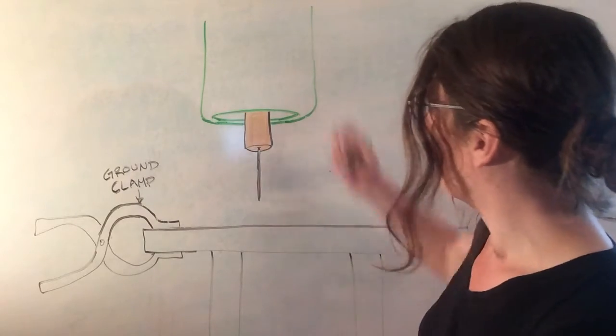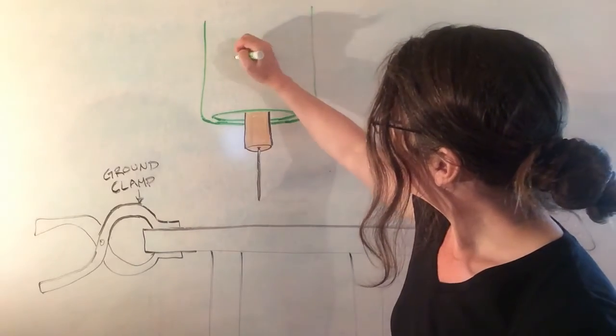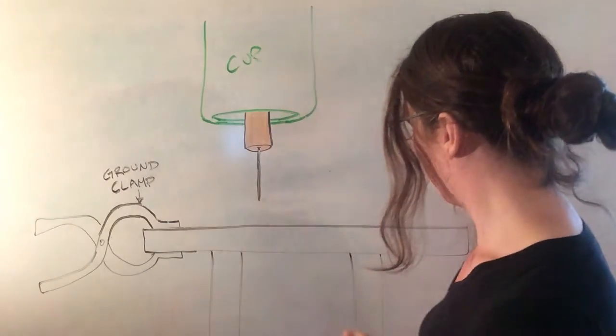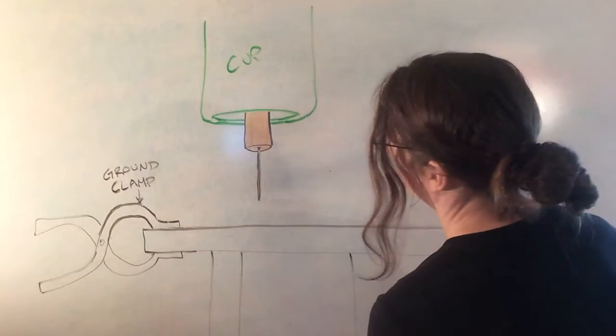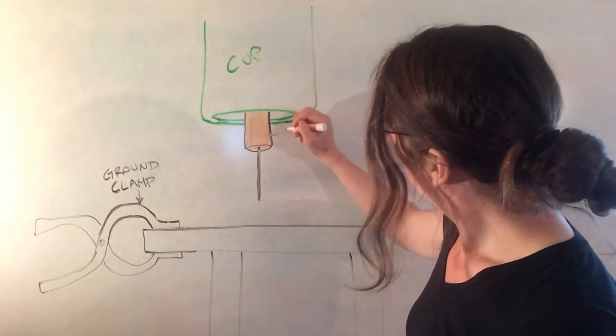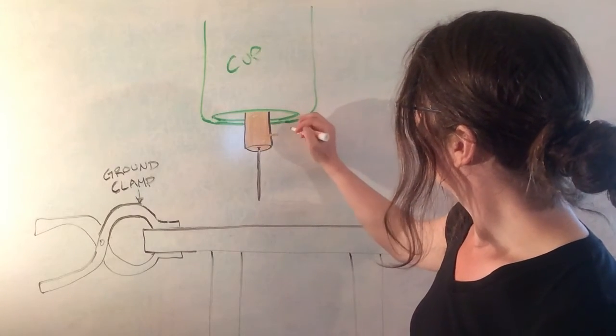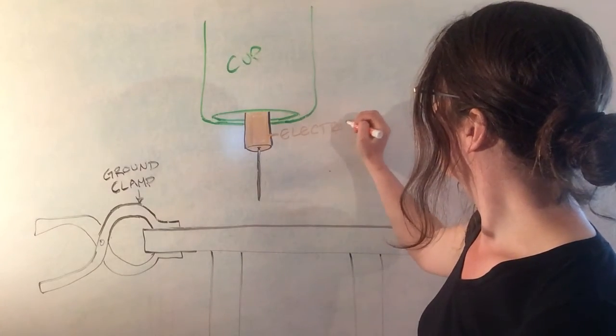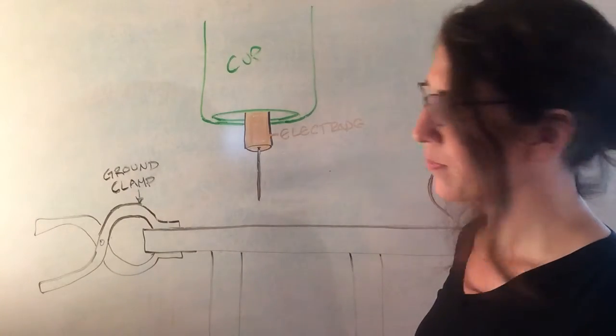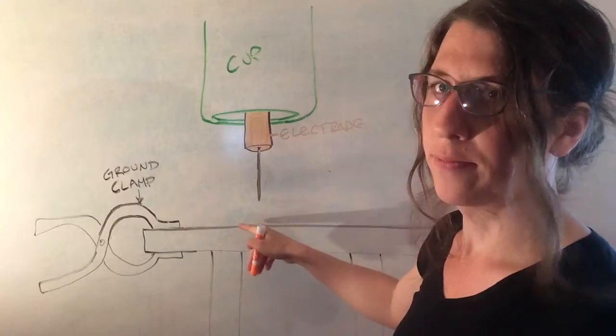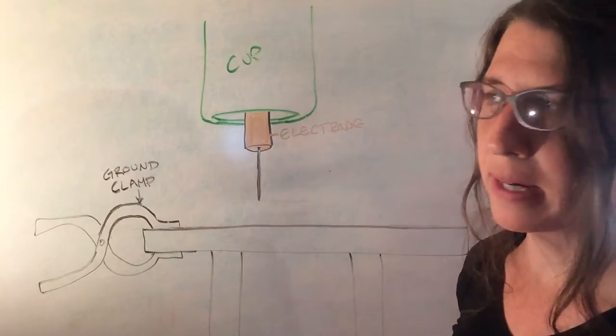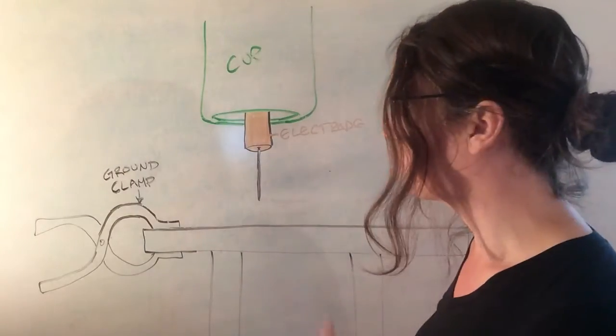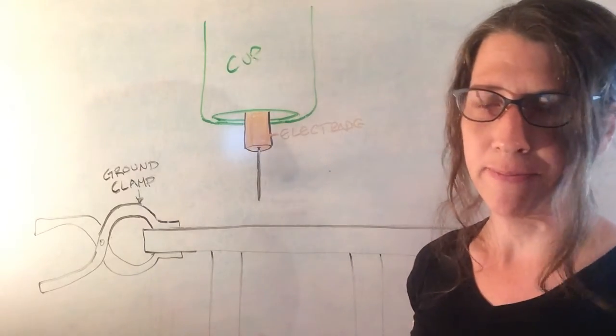Let's label a couple of the parts here. We've got our cup, we have our electrode, and then we have our wire. Our wire is our metal, but we're missing something. When we're welding, MIG stands for metal inert gas.